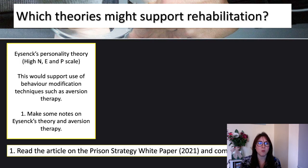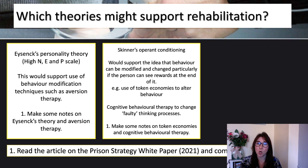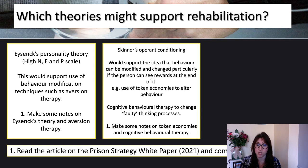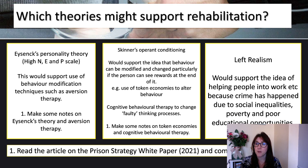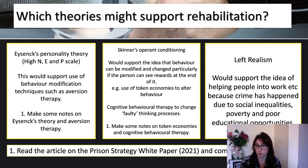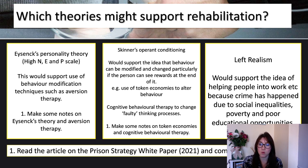Which theories might support rehabilitation? Eysenck's personality theory would support the use of behaviour modification techniques such as aversion therapy. Skinner's operant conditioning would support the idea that behaviour can be modified with rewards and punishments — like token economy. Cognitive behavioural therapy can also change faulty thinking processes. Finally, left realism would support the idea of helping people into work, because crime has happened due to social inequalities, poverty, and poor educational opportunities — by breaking these barriers you can get people back on the straight and narrow. I got students to read the Prison Strategy White Paper of 2020 and complete a worksheet linking it to how it shows rehabilitation.